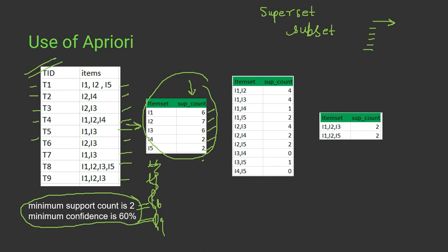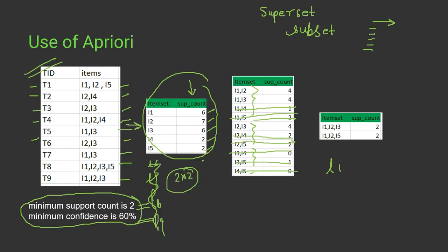Next, we find pairs of all remaining items and check their support: L1-L2, L1-L3, L1-L4, L1-L5, L2-L3, L2-L4, L2-L5, L3-L4, L3-L5, L4-L5. We again remove those pairs with support below 2. After filtering, we are left with pairs having sufficient support. Then we form triplets — for example L1, L2, L3 — and again count support as the number of transactions having all three items divided by total transactions.